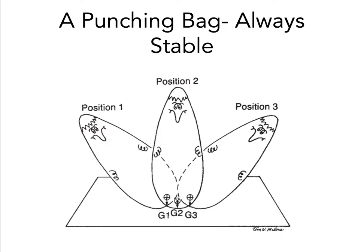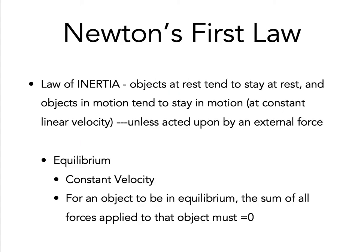Now let's examine Newton's laws. Newton's first law, the law of inertia, identifies the conditions under which an object will be in equilibrium. If the forces are not balanced, the segment will accelerate. Inertia is the property of an object that resists both the initiation of motion and a change in motion, and is directly proportional to its mass. Objects at rest tend to stay at rest and objects in motion tend to stay in motion at a constant linear velocity unless acted upon by an external force.